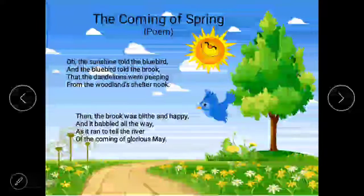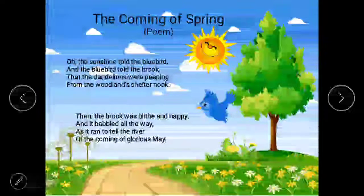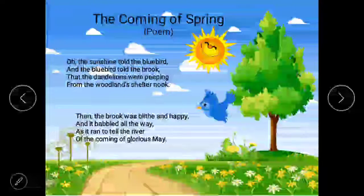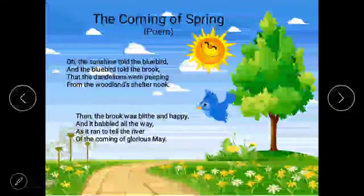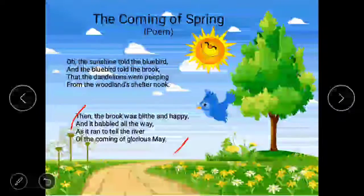Dandelion is a yellow type of flower, more like daisies. It is peeping — what does peeping mean? Looking secretly. It is looking secretly from the woodland, which here means dense forest. Shelter means shed, and nook means corner. So the dandelions are looking secretly from the dense forest corner. The sunshine told the bluebirds, and the bluebirds told the brook that the dandelions are peeping from the woodland shelter nook.